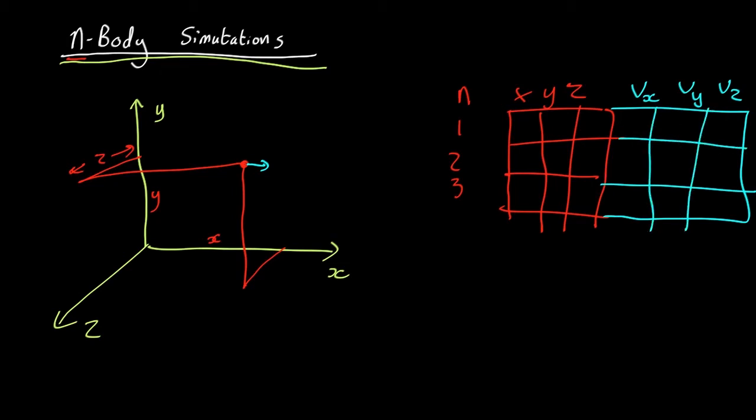So, you pick all your particles, particle number 1, 2, 3, 4, particle n, where n is going to be a large number. And for each of them, you give them positions and velocities. And to start off with, those positions and velocities are going to be such that the particles are spread pretty uniformly everywhere, with just a very small amount of lumpiness.